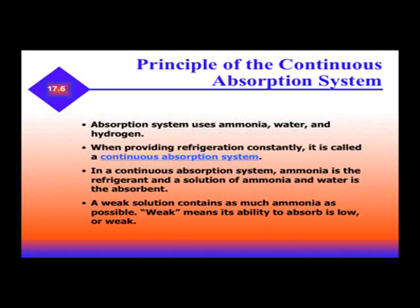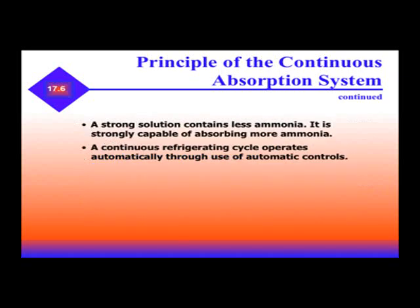Absorption systems use ammonia, water, and hydrogen. When providing refrigeration constantly, it's called a continuous absorption system. In a continuous absorption system, ammonia is the refrigerant, and a solution of ammonia and water is the absorbent. A weak solution contains as much ammonia as possible — weak meaning its ability to absorb is low or weak. A strong solution contains less ammonia and is strongly capable of absorbing more ammonia.